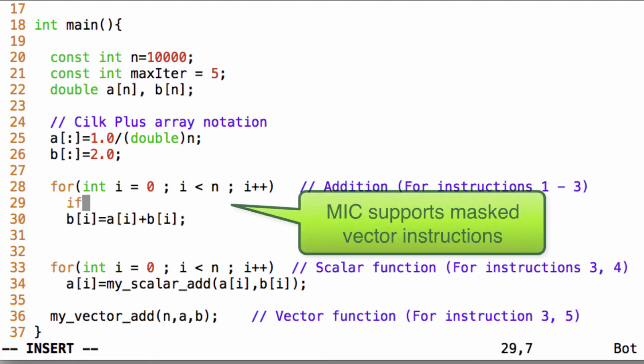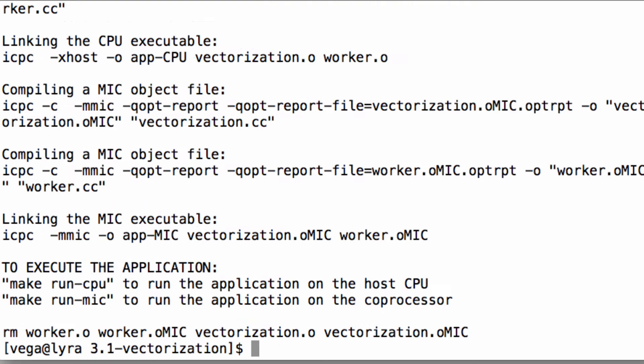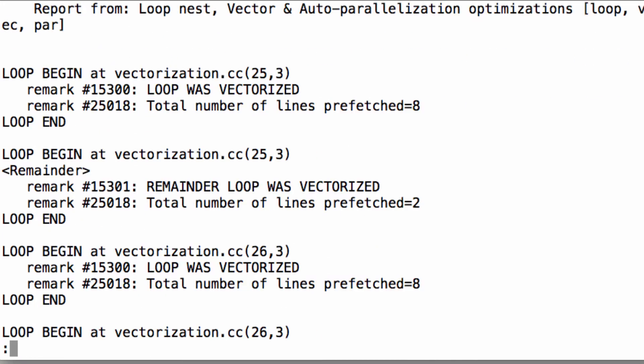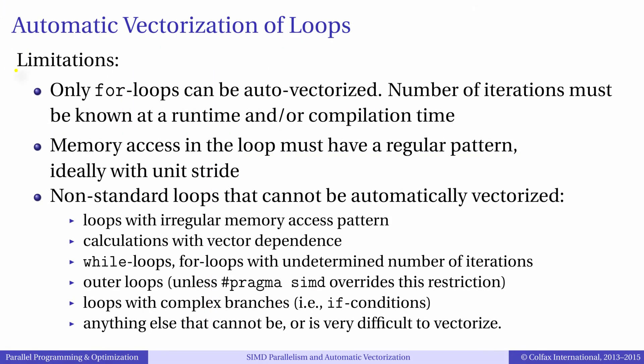Automatic vectorization by Intel compilers is typically very flexible, and the compiler is able to vectorize loops with more complex expressions than what we saw. However, there are limitations on what the compiler can do for vectorization, and it is important to design loops in such a way that those limitations do not prevent automatic vectorization.